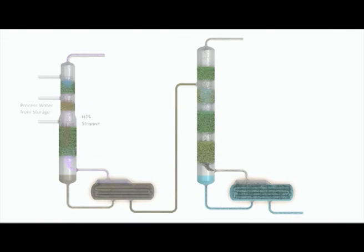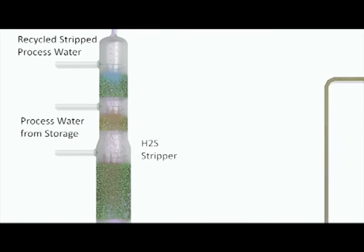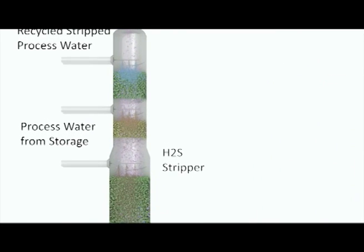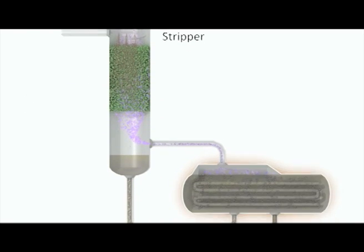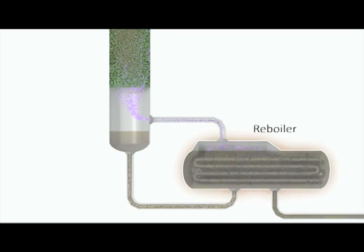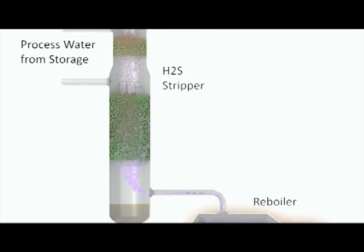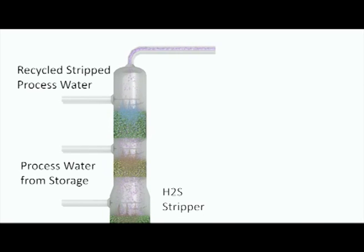Process water from storage, which contains both hydrogen sulfide and ammonia, passes through a random packing within the hydrogen sulfide stripper. At the bottom of the stripper, the combined solution is heated to 160 degrees Celsius in a reboiler and the resultant vapor rises through the column to contact the downflow of process water, allowing hydrogen sulfide to be stripped out into the vapor.